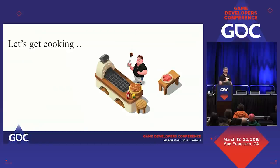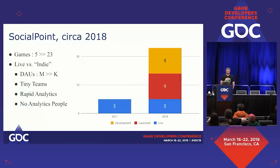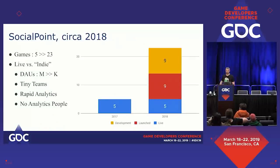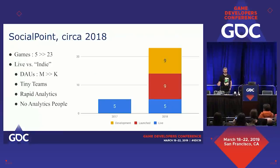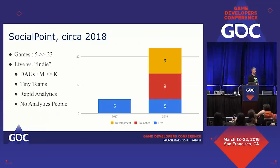Thanks to the Tasty Town art team — that's one of our games — for splashing some color into the presentation. We'll also have some dragons. Social Point — why did we have to start this adventure and find ways to use data differently? Social Point was using data long before I came; they've been around for about 10 years. So data was there. Why did we have to change things? Where did all these challenges come from?